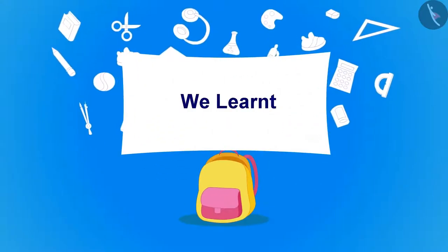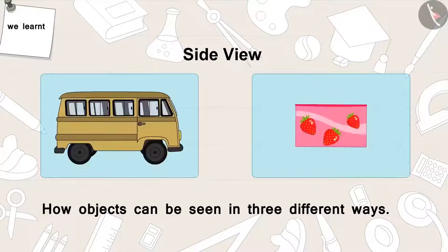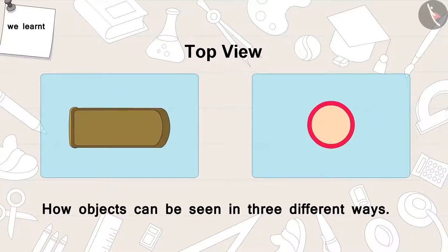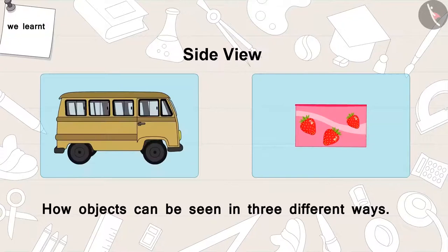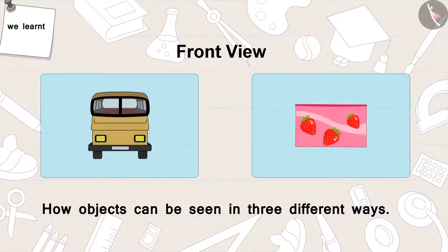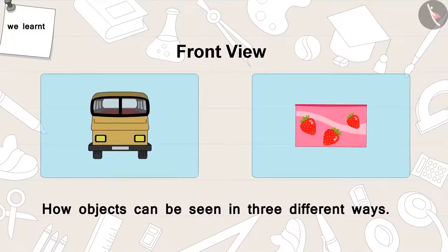Children, in this part we learnt how objects can be seen in three different ways: from above — top view; from front — front view; and from the side — side view. In the next video, we will learn more about this with the help of some interesting examples.